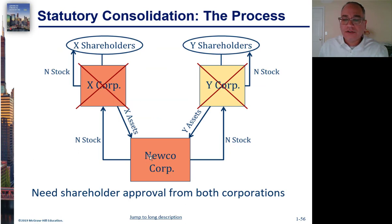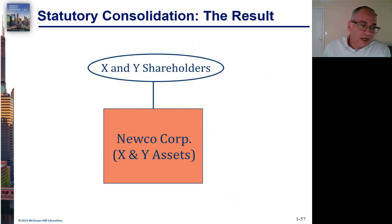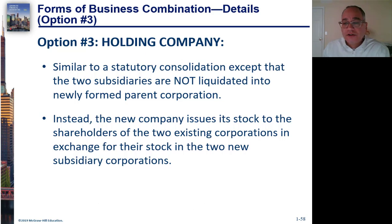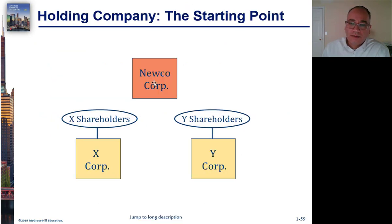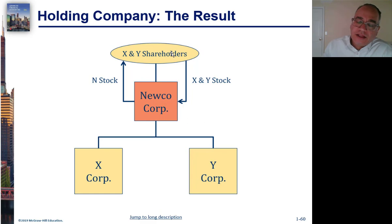In a statutory consolidation, the new company sends its stock to the two old companies in exchange for their assets, and then the new company stock goes to the old company shareholders. When done, X and Y shareholders only own the stock of the new company. Another option is a holding company, which is more common especially in a hostile takeover. Similar to a statutory consolidation, but the two companies are not liquidated — instead, the new company issues its stock to the shareholders of the two existing companies in exchange for their stock, so NewCo buys out the shareholders in exchange for its stock.